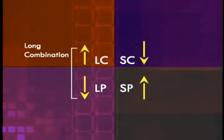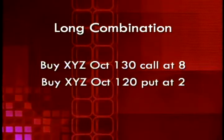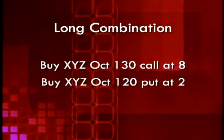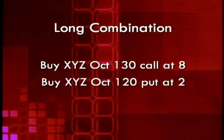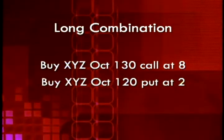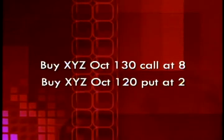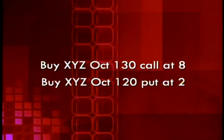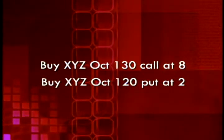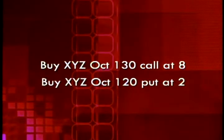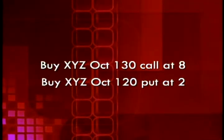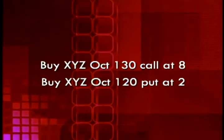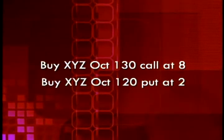Let's take a look at an example. In this case, we're buying an October 130 call and buying an October 120 put. What makes this a combination? The investor bought an XYZ call and bought an XYZ put — that's what makes it a combination. Although the expiration dates are the same, the strike prices are different in this particular pair.